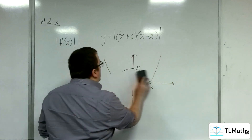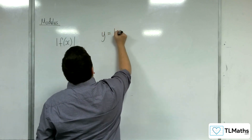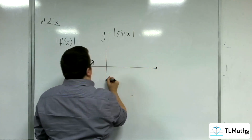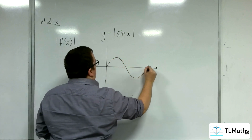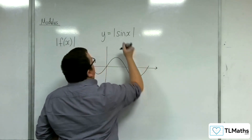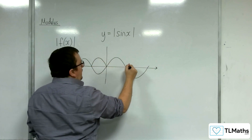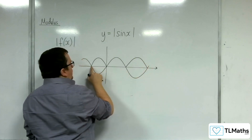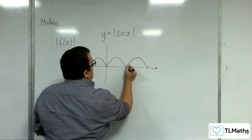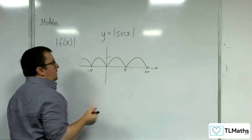You can do this with any function you like. For example, y equals the modulus of sin x. If we think about sin x and then take the modulus of that, the pieces below the x-axis get reflected up. The sine curve's modulus would look like this — where that's pi, that's 2 pi, that's minus pi, and the amplitude is 1.